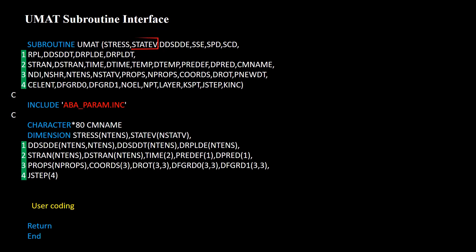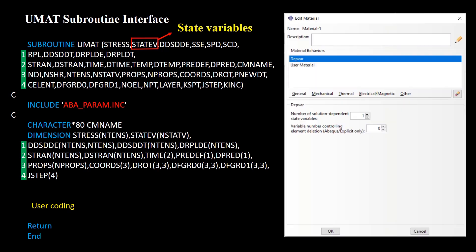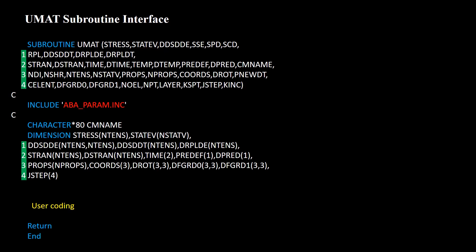The state variables array allows us to save state variables and use them in the next increment. The length of this array is defined in the GUI by the DEPVAR option. The next variable is the Jacobian matrix, which is a mandatory output — its necessity and role were described in a separate video.